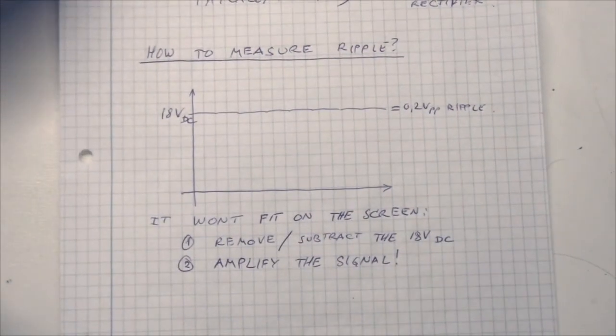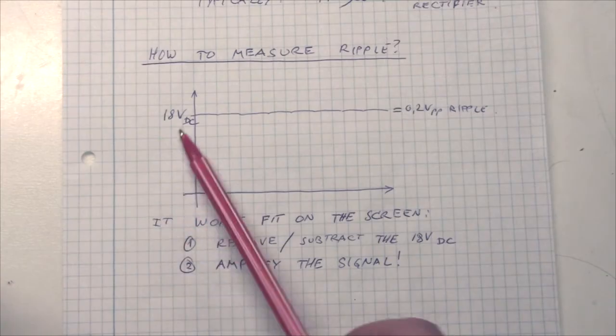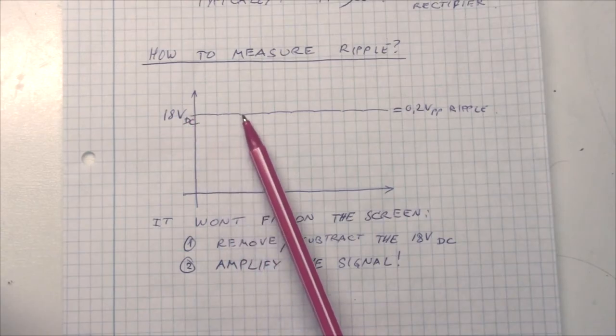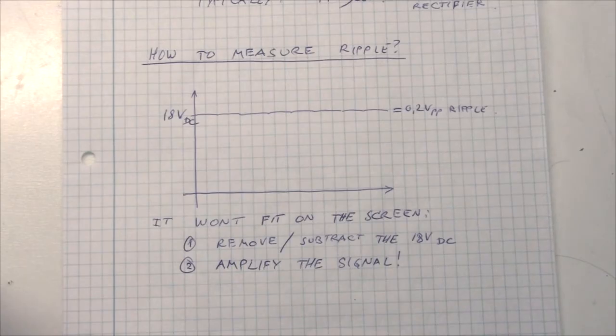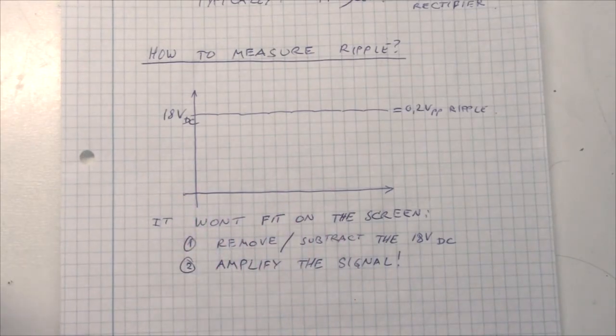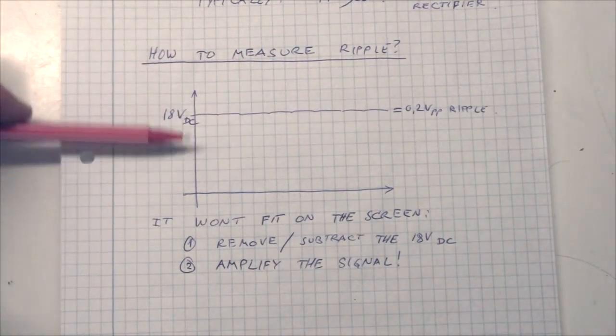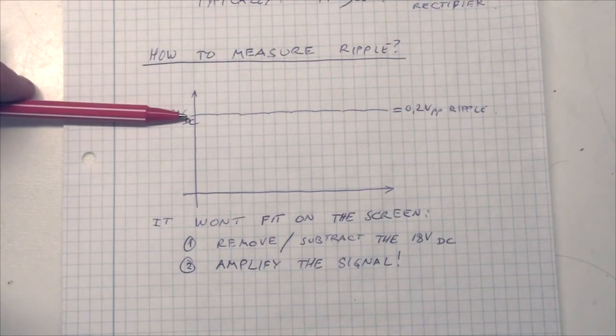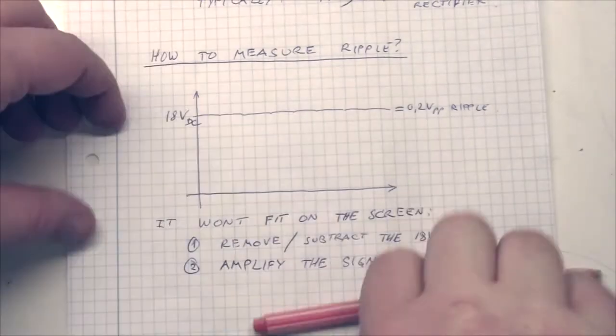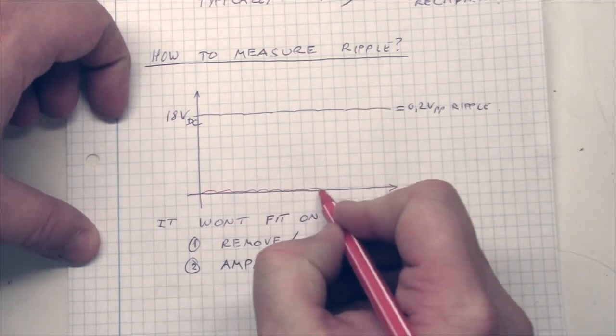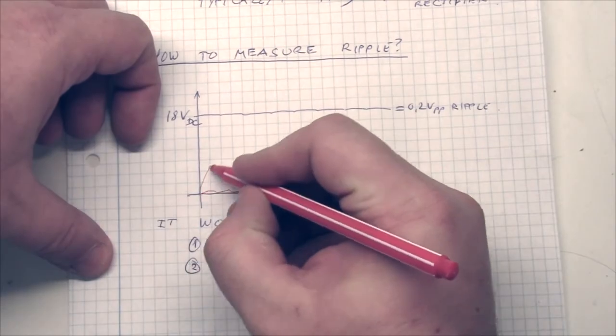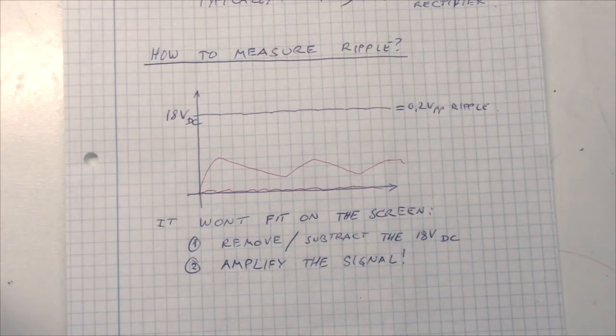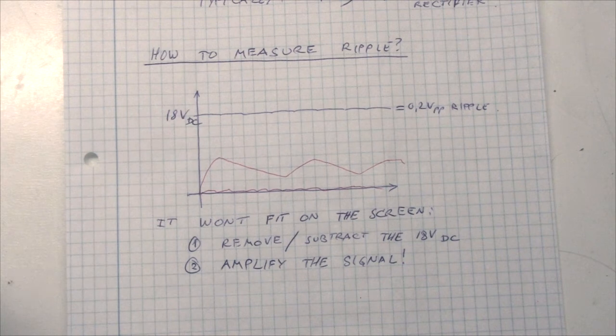And now we get to how to measure ripple, because typically, like in our case, we have 18V output from across our capacitor, and when we draw current, we have these little ripples here. So, it can be very difficult to measure, because you are basically measuring something like maybe 0.2V on an 18V scale on your oscilloscope. So, basically, what we have to do is, if we can subtract the 18V, the ripple will be moved down to around here, and then we can amplify the signal, and we will see the ripple.